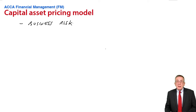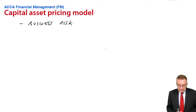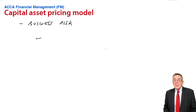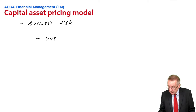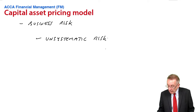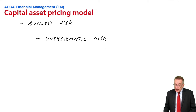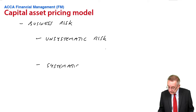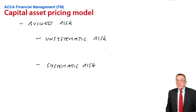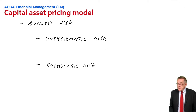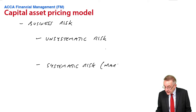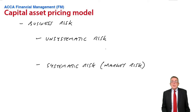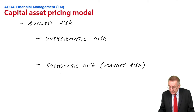And we say there are two elements to it. There are two things that make a business risky. One part of it is what we call unsystematic risk. The other part of it is systematic risk, or the other name for it is market risk.